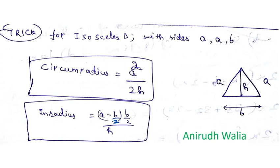For an isosceles triangle, capital R denotes circumradius which is H squared divided by 2H.